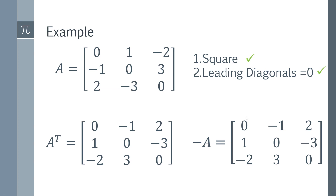Then you compare the two. A transpose and minus A are both three by three matrices, and you look at each individual element — compare the one-one element to the one-one element, the second to the second, and go through every single element. You can immediately see that these two are equal, and because we've satisfied the condition that A transpose equals minus A, we've proven that this matrix is a skew symmetric matrix.